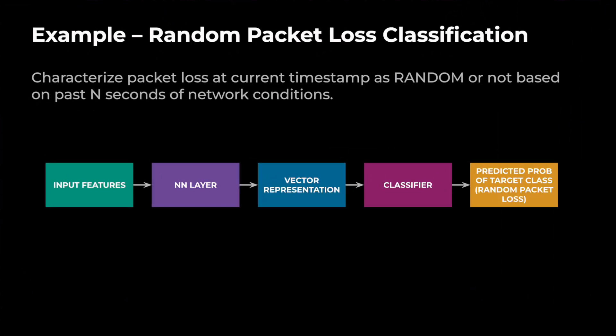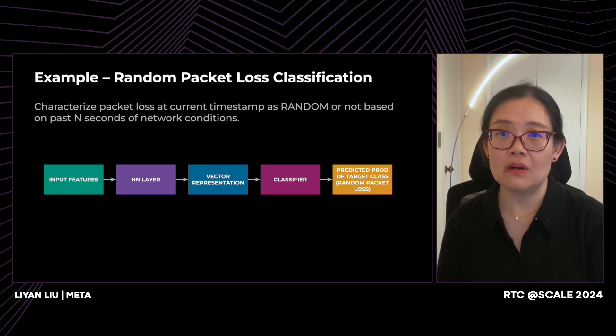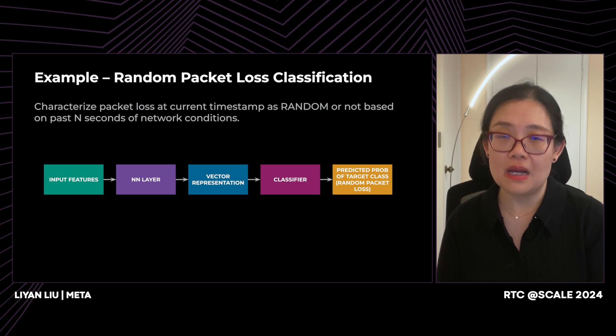This slide talks about random packet loss classification as an example of network characterization. The objective is: at the current timestamp, if we see a packet loss, we want to classify it as random or not based on the past n seconds of network conditions. For model training, we use time-series data as input, pass it through neural network layers like the LSTM, get a vector representation, pass it through a classifier, and the output is the predicted probability of being a random packet loss.